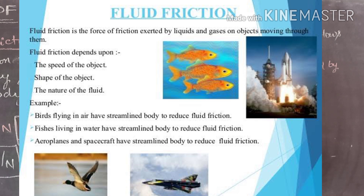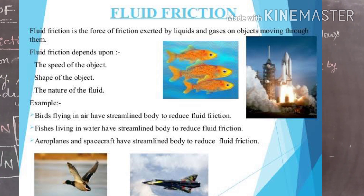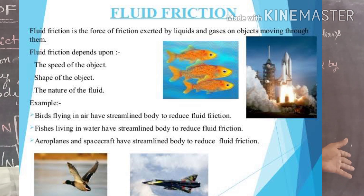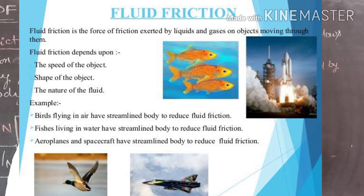Number two: shape of the object. The front portion of an aeroplane and the front portion of a bird are similar in shape. Birds have a special body arrangement to reduce fluid friction, and aeroplanes are designed with a beak-like shape based on the same principle. Similarly, the front of a ship is shaped like a knife edge — if it were broad, the area would be more and friction would be more. The knife-edge shape allows the ship to cut through the water and move freely.